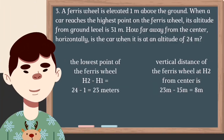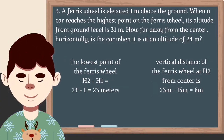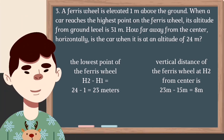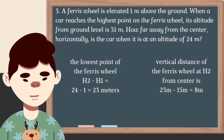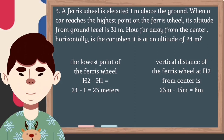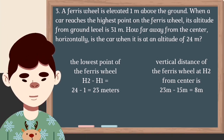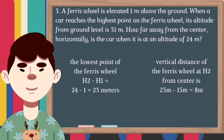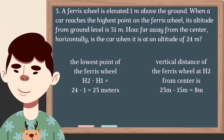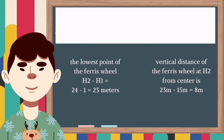Now let us solve for the position at H3. H3 minus H1 is equal to 24 minus 1, which equals 23 meters. Now let us find the vertical distance from the center at that height: 23 meters minus 15 meters is equal to 8 meters.